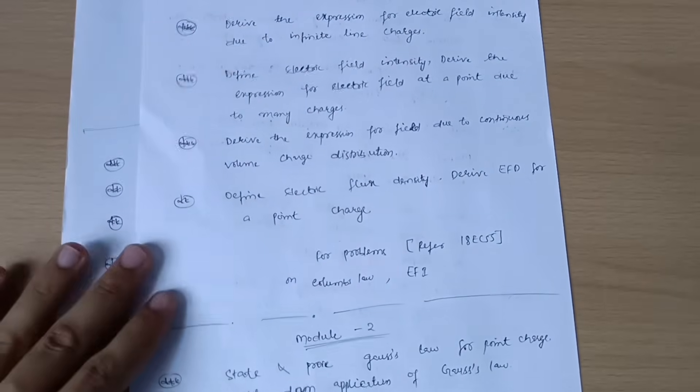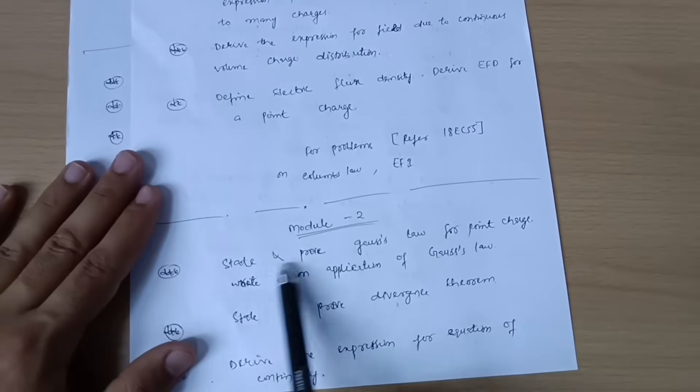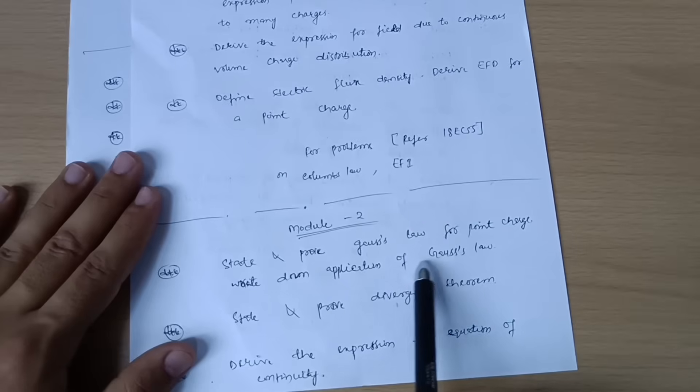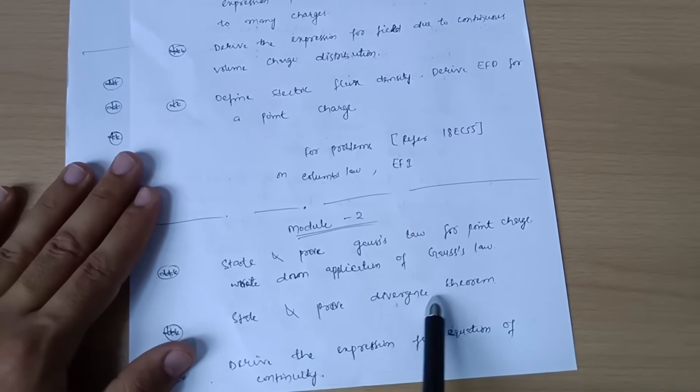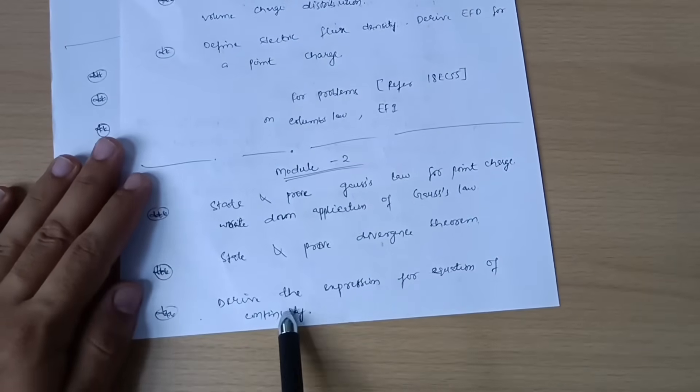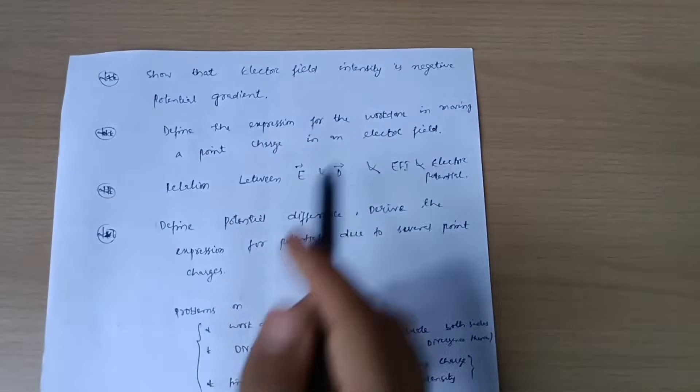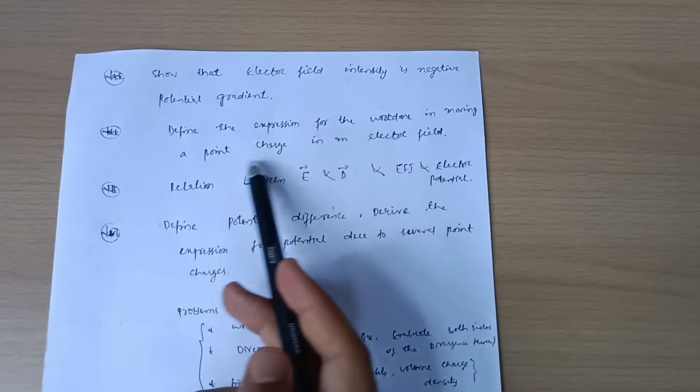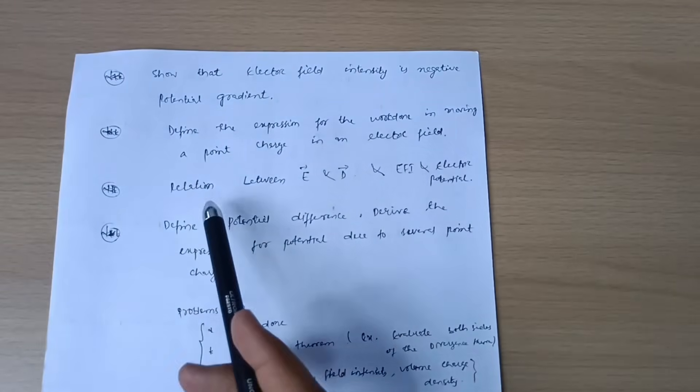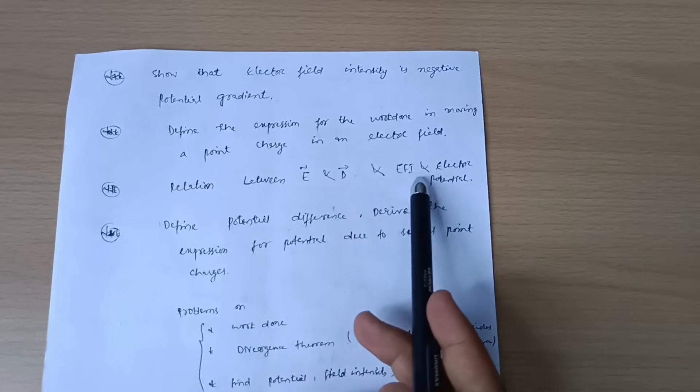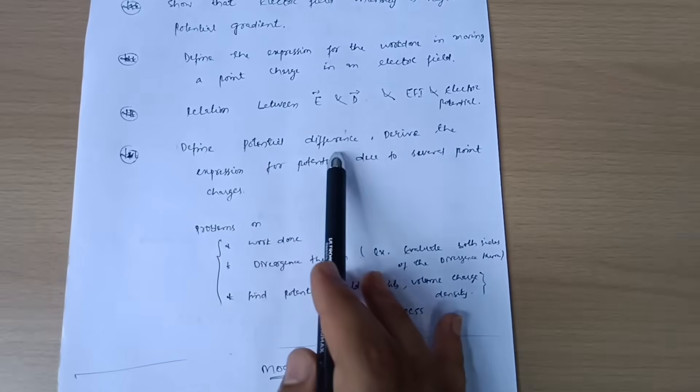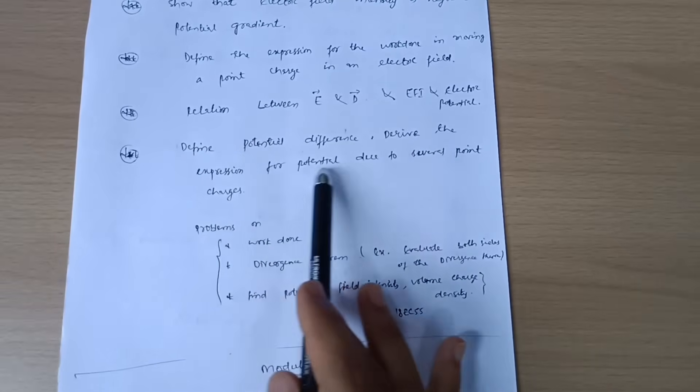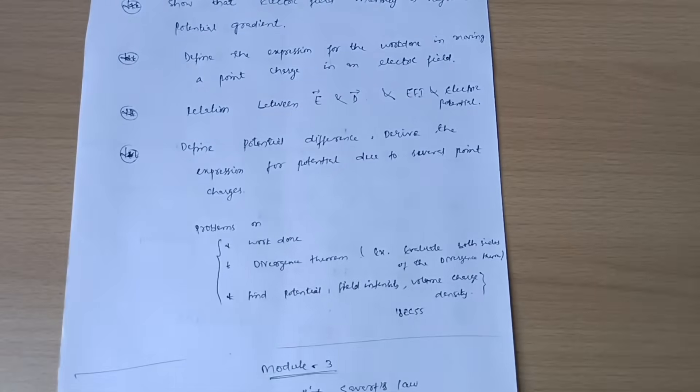Module second: State and prove Gauss's law for point charge. Write down application of Gauss's law. State and prove divergence theorem. Derive the expression for equation of continuity. Show that electric field intensity is negative potential gradient. Define the expression for work done in moving a point charge in an electric field. Relation between E and D, and V and electric potential. Electric field intensity and electric potential. Define potential difference. Derive the expression for potential due to several point charges.